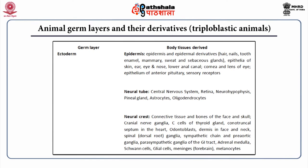Various body tissues have arisen from each germ layer of triploblastic animals. The ectoderm gives rise to epidermis and epidermal derivatives such as hair, nails, tooth enamel, mammary, sweat and sebaceous glands, epithelia of skin, ear, eye, nose, lower anal canal, cornea and lens of the eye, epithelium of anterior pituitary and sensory neuroreceptors. The neural tube gives rise to the central nervous system, retina, neurohypophysis, pineal gland, astrocytes and oligodendrocytes. The neural crest includes connective tissue and bones of the face and skull, cranial nerve ganglia, C cells of thyroid gland, odontoblasts, dermis in face and neck, spinal ganglia, pre-aortic ganglia, parasympathetic ganglia, adrenal medulla, Schwann cells, glial cells and melanocytes.